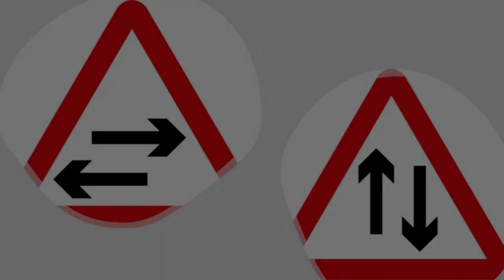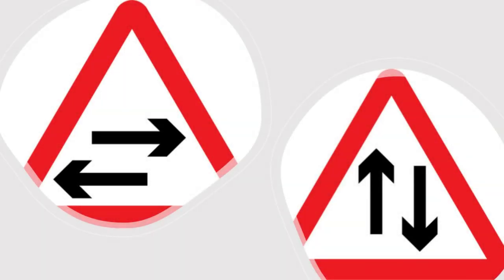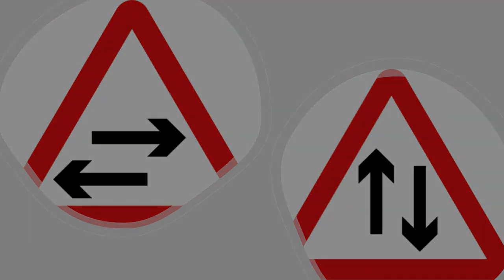Hi, this is Richard from the future. While editing this video I realised I needed to explain the difference between the two warning signs for entering a two-way traffic area. On one sign the arrows go up and down — that tells you you're not changing direction but that traffic will now be coming towards you. On the other sign the arrows go left to right — you'll generally find that when you're coming to a give-way line and joining a new two-way road from your one-way road.